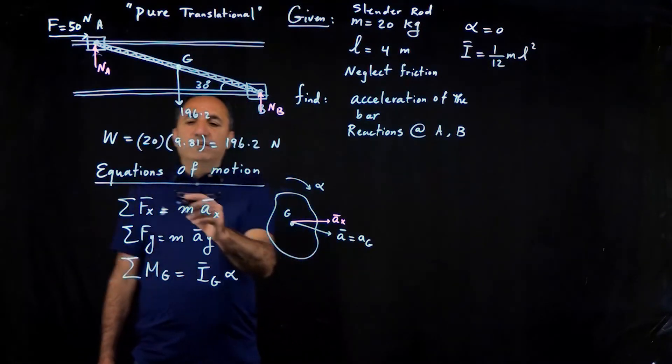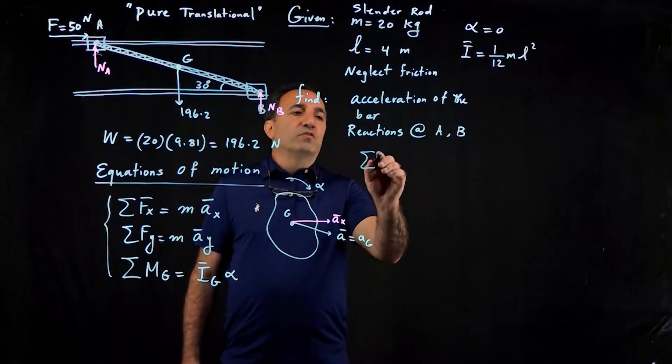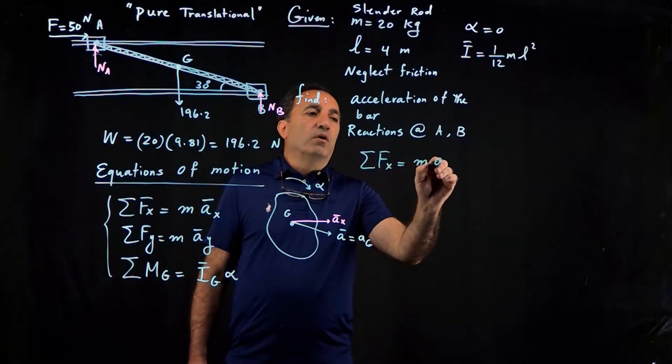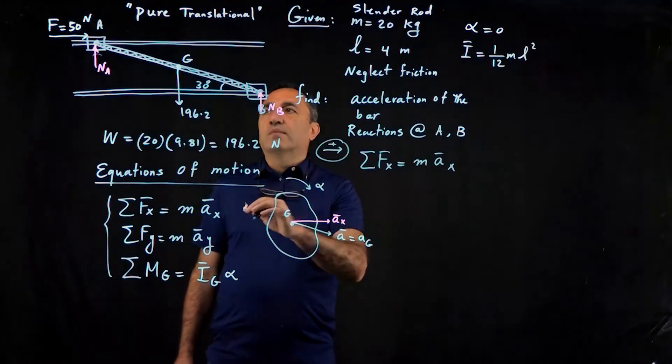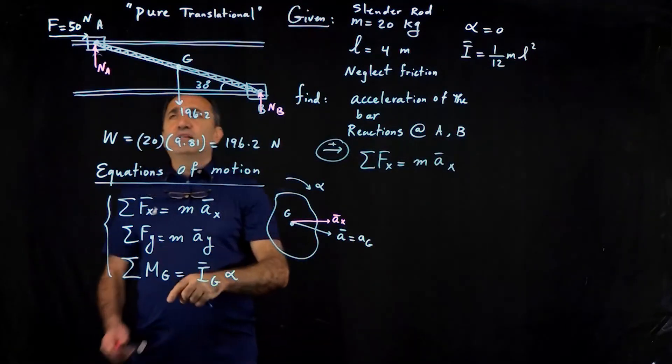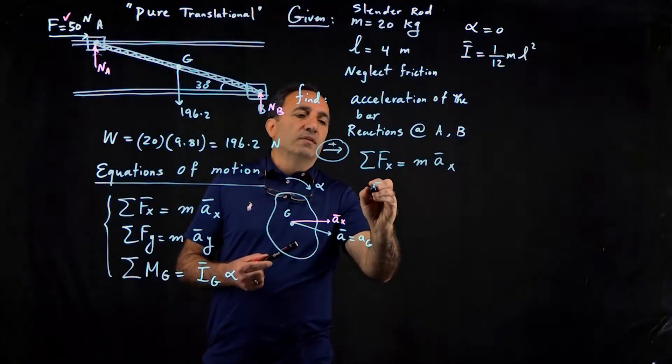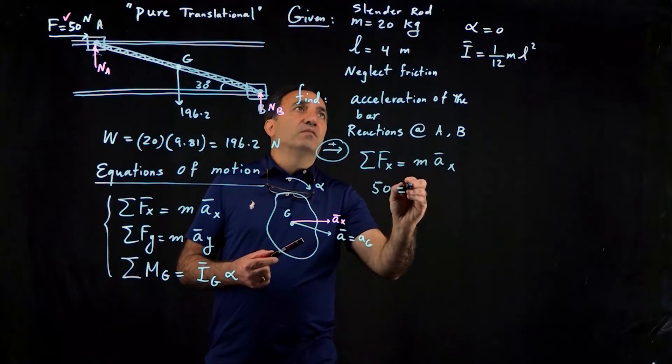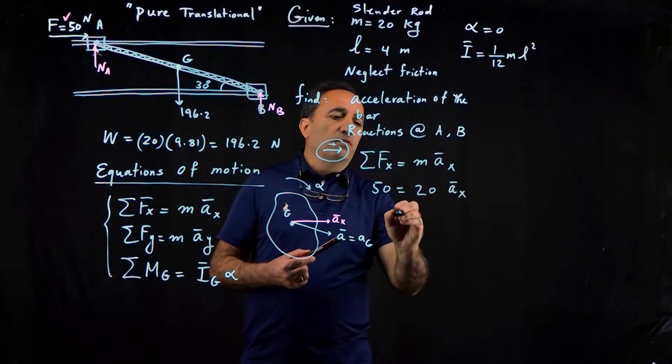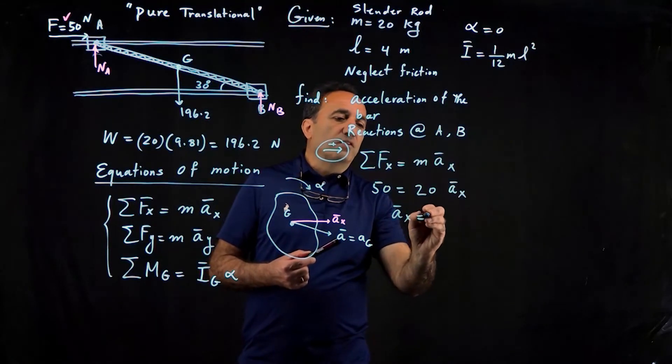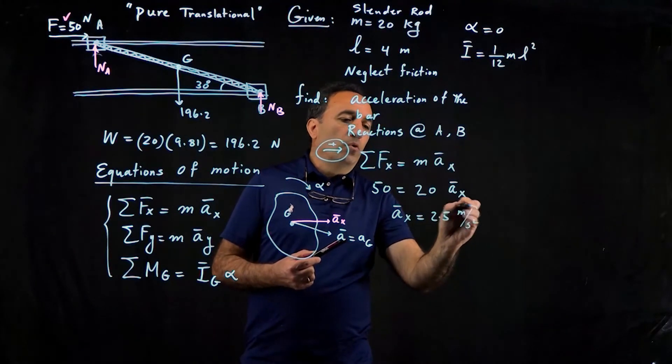So let's go ahead and apply these equations one by one. I start with the sum of the forces in the x direction equal ma-bar x. Keep in mind that we have to always refer to our free body diagram. So look at the free body diagram. The only force we have here in the x is the 50 newtons. Mass is 20 kilograms. Therefore, a bar x, which is the acceleration of the whole rod, regardless of which point...